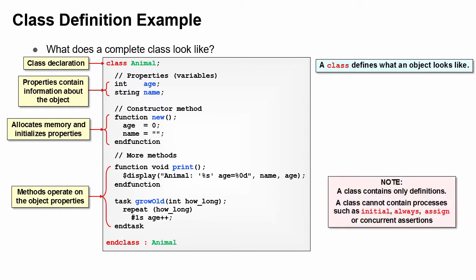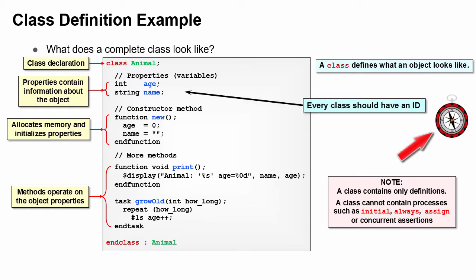A class only contains definitions. All procedural code in a class must go in a method. Unlike a module, a class cannot have processes such as initial or always blocks, continuous assignment statements, or concurrent assertions. This example shows two recommendations. Look for the compass for more of these.